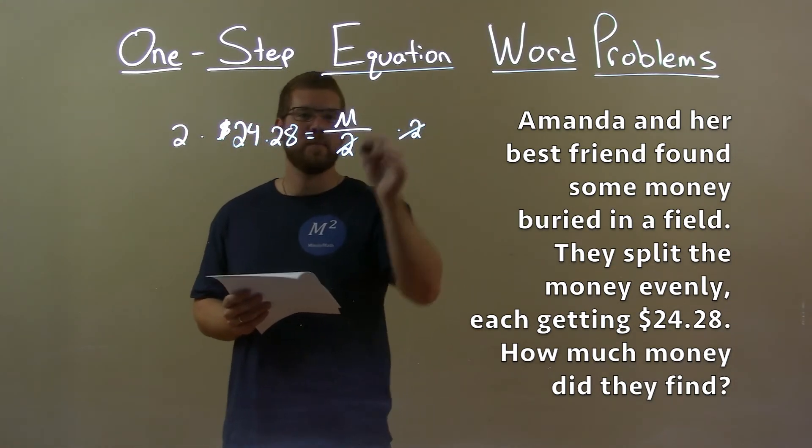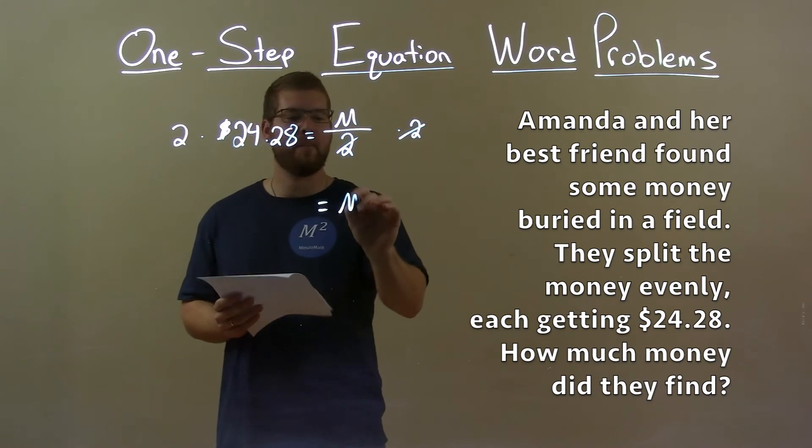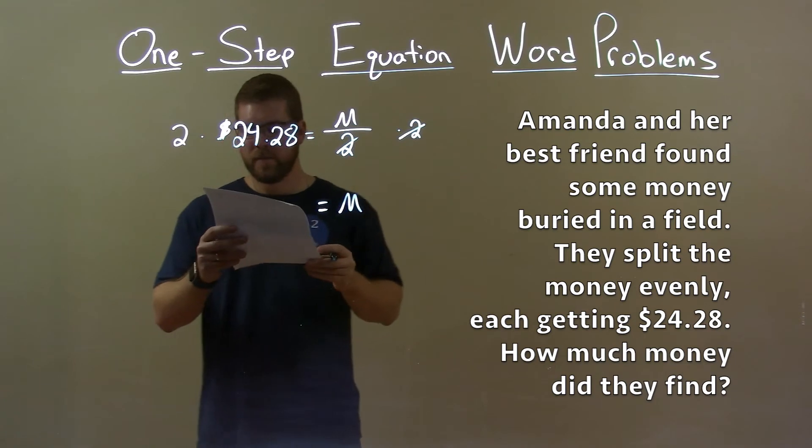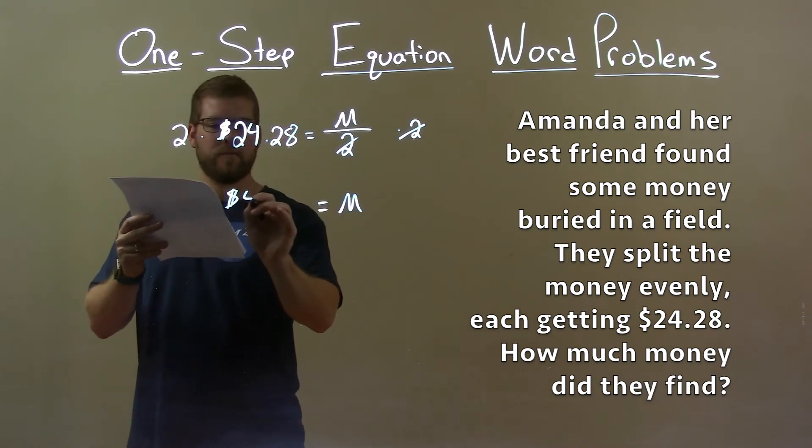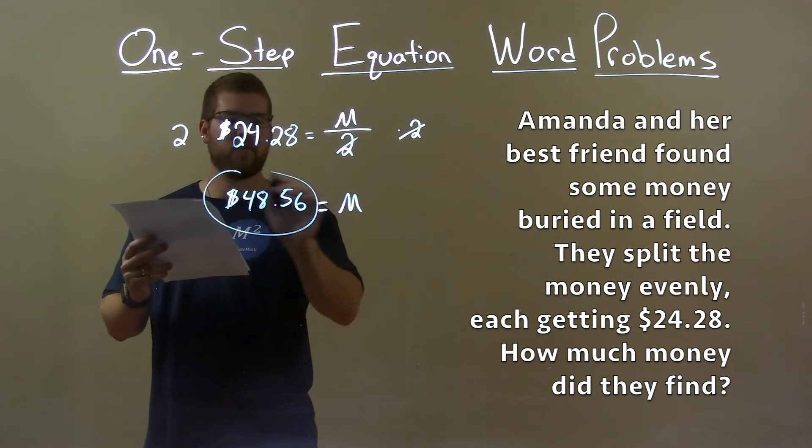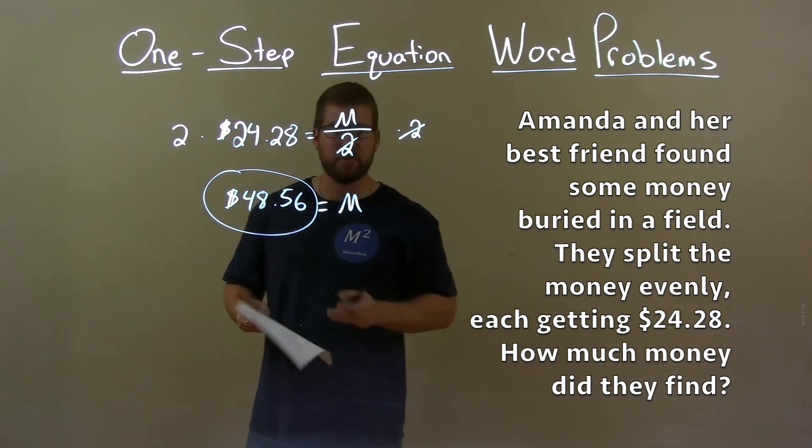So what that does is eliminate the 2 on the right, giving me M by itself, what we want to find. 2 times 24.28 is $48.56. And so, that is our final answer, the total money they found buried in the field.